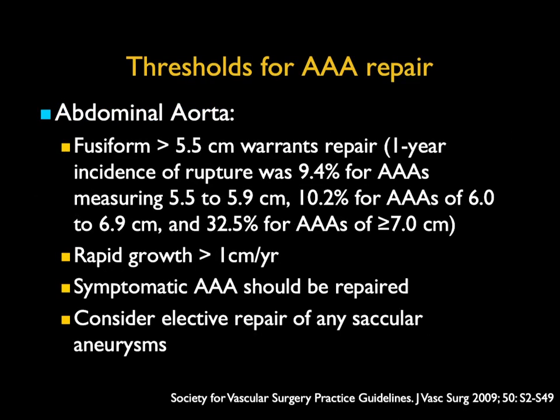There's a lot of interest in when to repair aortic aneurysms. Some basic rules: a fusiform aneurysm over 5.5 cm warrants repair, because the one-year incidence of rupture was just under 10% for aneurysms in the 5.5 to 5.9 cm range. If you reach 7 cm, it's 32%, so in those patients repair is mandatory. If an aneurysm is growing over a centimeter a year, repair is necessary. Symptomatic aneurysms should be repaired regardless of specific size.